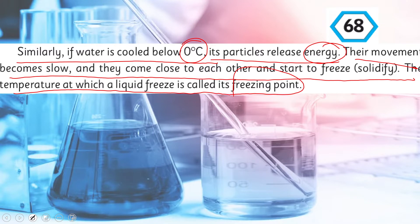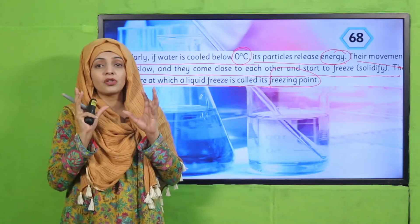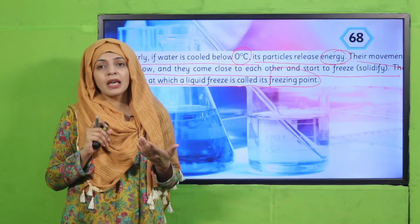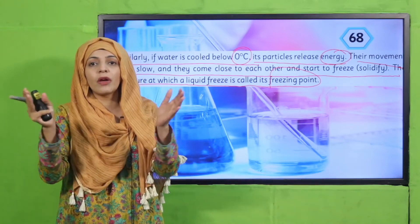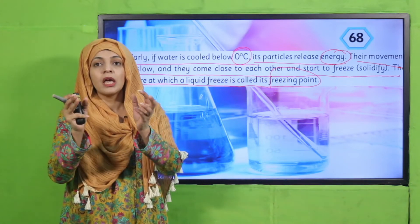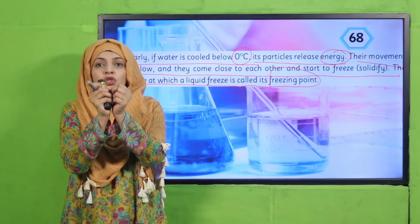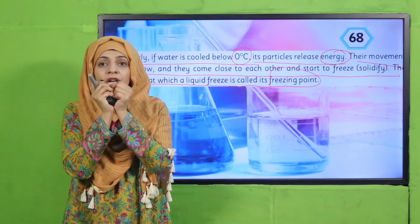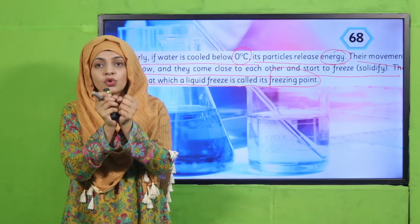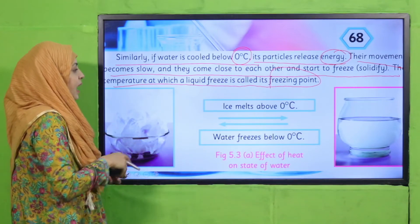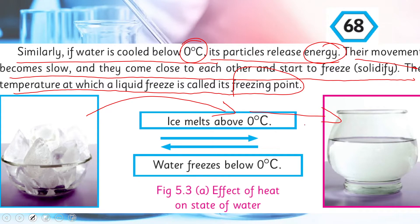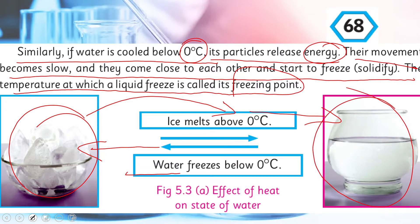When water is cooled down — for example, placed in the freezer where the temperature is very low, below zero degrees — what happens is the particles start to release energy. They start to release the energy they had absorbed, and they slow down and come near one another, and they solidify and freeze. The temperature at which the liquid freezes into solid is called its freezing point, which is zero degrees. So, ice melts above zero degrees centigrade and water freezes below zero degrees centigrade. This is a reversible reaction — you can freeze it and you can change it into liquid — and it is all because of temperature.